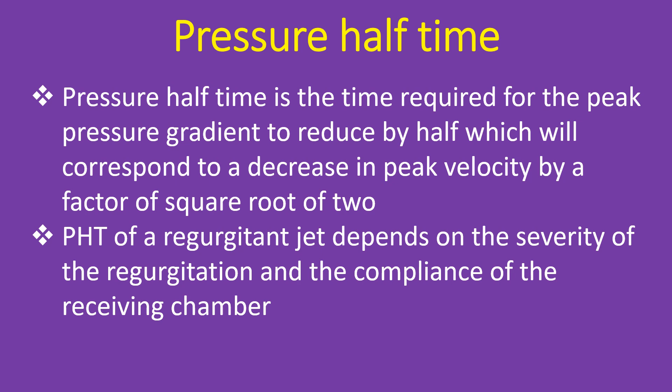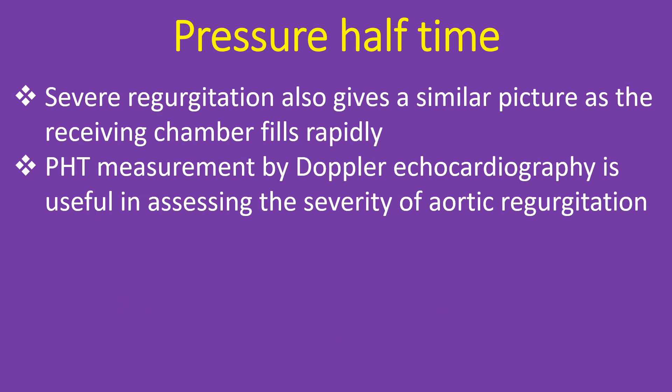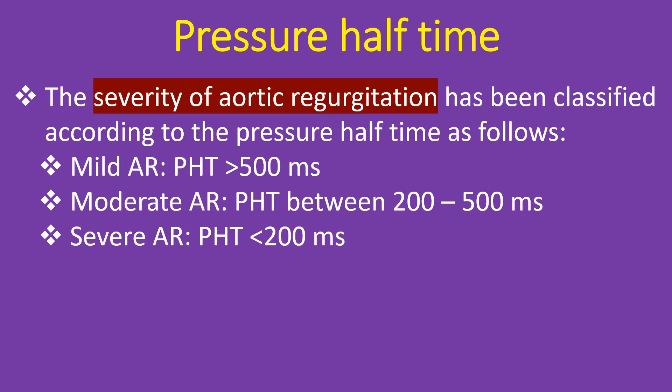PHT of a regurgitation jet depends on the severity of regurgitation and the compliance of the receiving chamber. If the compliance of the receiving chamber is low, the pressure in the receiving chamber rises rapidly and the pressure gradient decreases rapidly, leading to a steep slope of the Doppler tracing and a low pressure half time. This is the usual situation in acute aortic regurgitation, when the receiving chamber does not get much time to dilate and accommodate the regurgitant flow. Severe regurgitation also gives a similar picture as the receiving chamber fills rapidly. PHT measurement by Doppler echocardiography is useful in assessing the severity of aortic regurgitation.